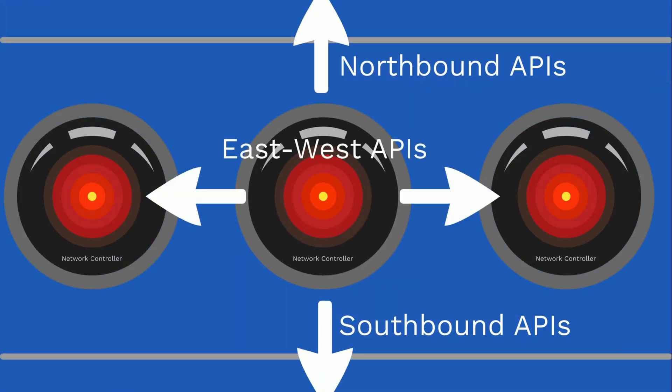There's also the idea of east-west APIs on network controllers. When designing networks, we never want a single point of failure — high availability is key. If you only have a single network controller, that becomes a single point of failure. So to add resiliency, we typically add multiple controllers. If the primary controller goes down, other controllers can take over, and that communication happens through east-west APIs.